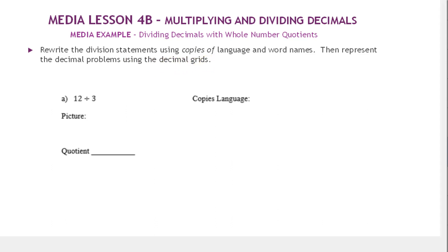So we're going to start with 12 divided by 3, so this doesn't have any decimals. And remember we can think of this in copies language as how many copies of 3 are in 12.